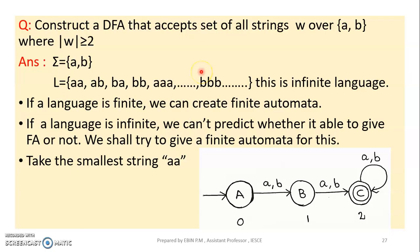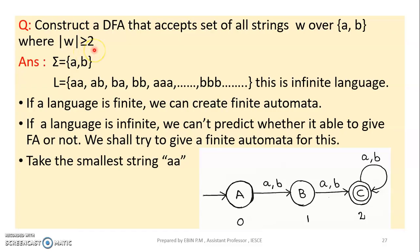Next example. Construct a DFA that accepts a set of all strings w over alphabet {a, b}, where the length of w is greater than or equal to 2. This is the condition.